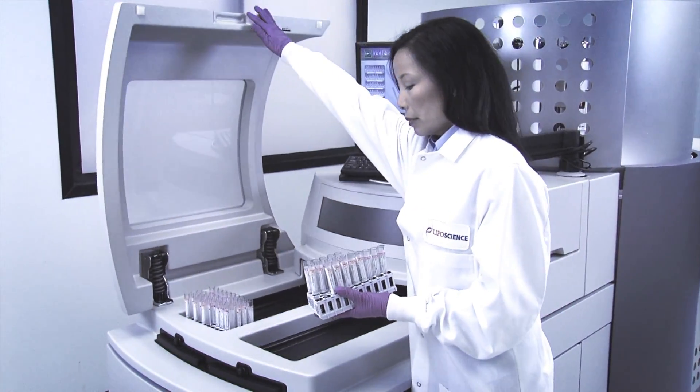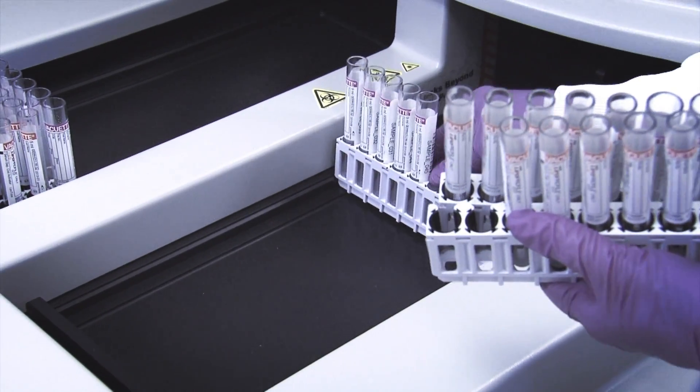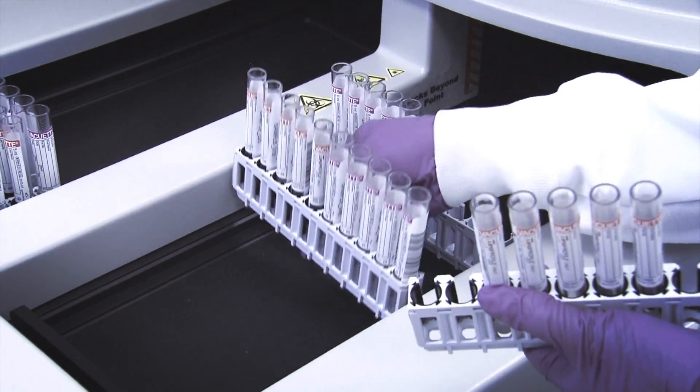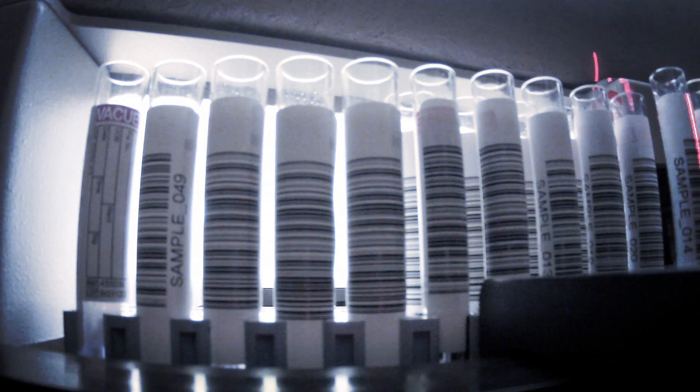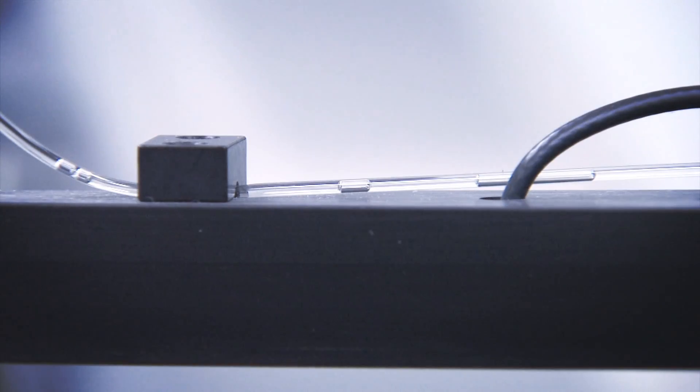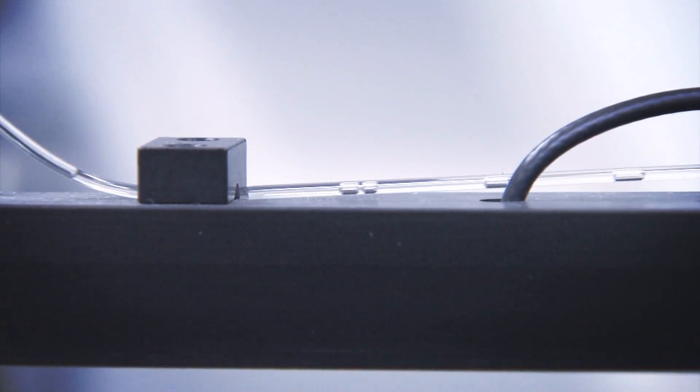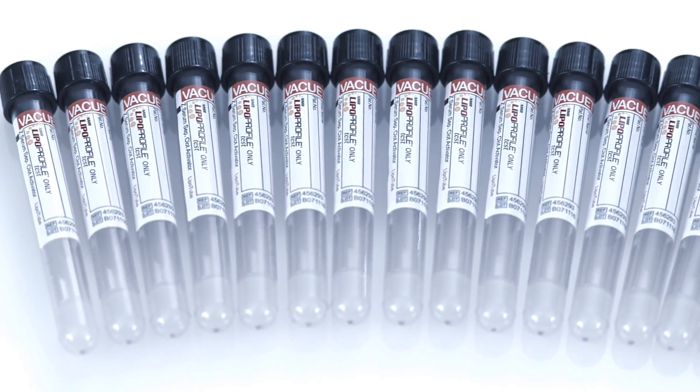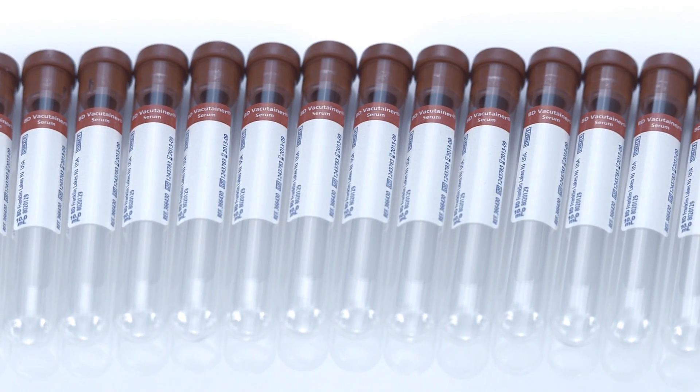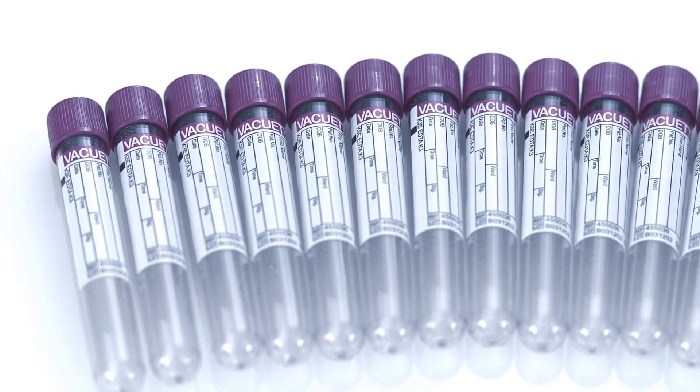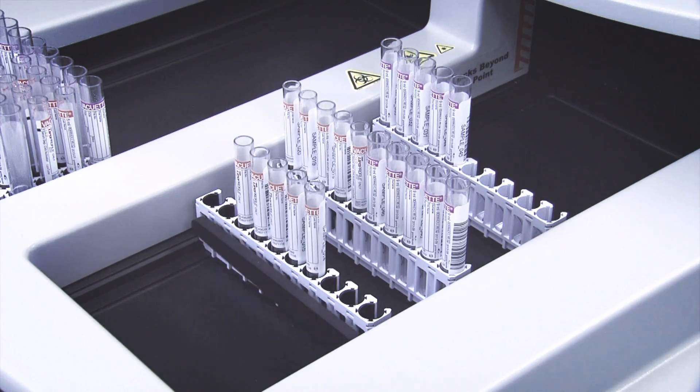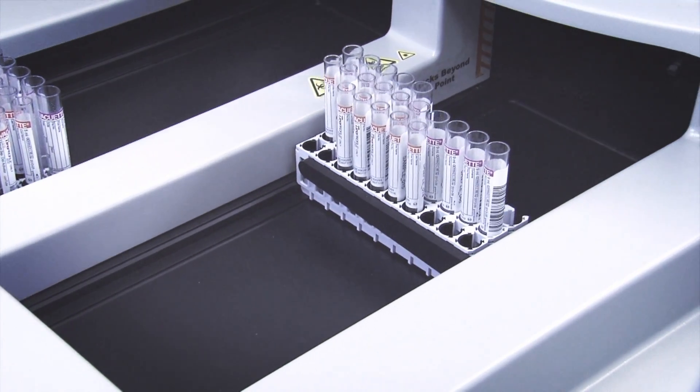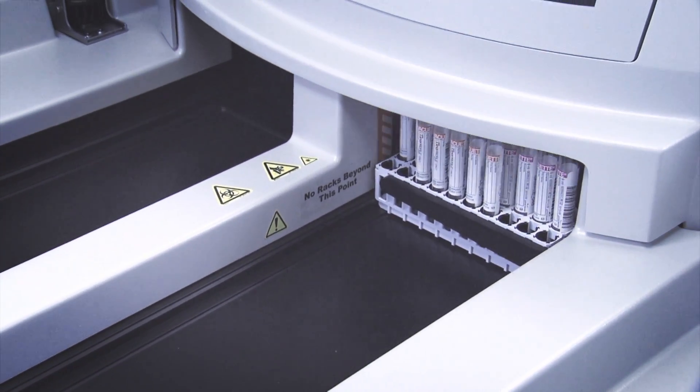Bar-coded specimen tubes can be placed directly onto the system maintaining positive specimen identification throughout the process. The direct tube sampler has been designed to process serum or plasma specimens directly from NMR lipoprofile test tubes, standard red top tubes or standard lavender top tubes. Continuous access of up to 200 patient specimens allows you to maximize walk-away time and throughput efficiencies.